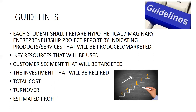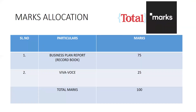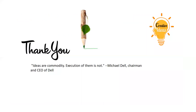Regarding marks allocation per university guidelines, the total marks will be 100: 75 marks for your business plan report written in the record book, and 25 marks for an oral examination or viva. The maximum marks you can secure is 100. This journey of making your Business Skill Development 4 report will be a good learning experience and a roadmap for your future. I hope you have understood the basic foundation ideas of thinking creatively.